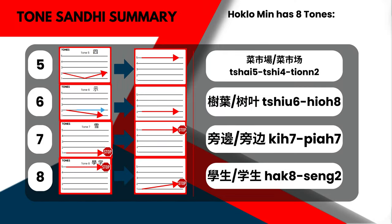The next example means 'food market.' The first syllable is pronounced on its own as one form; in context, the full word changes. The following example means 'tree leaves.' By itself, the first word is pronounced one way; in context, the full word changes. Another example meaning 'side' also demonstrates how the first syllable changes in context when it is not the final syllable of an utterance.